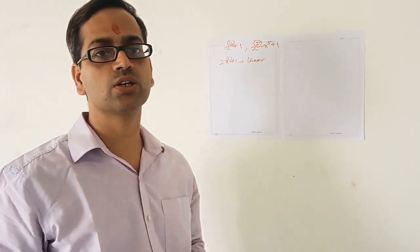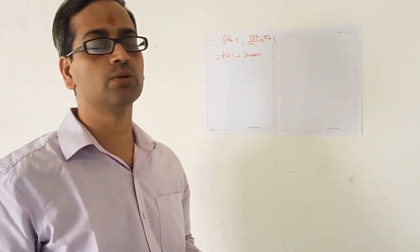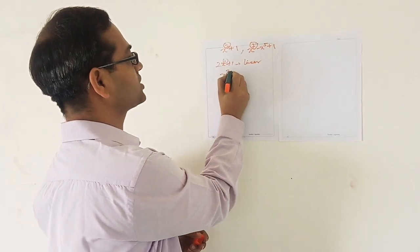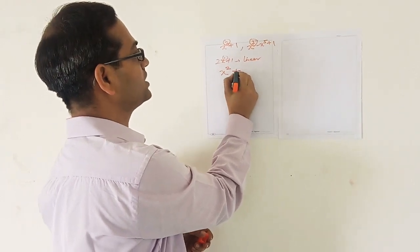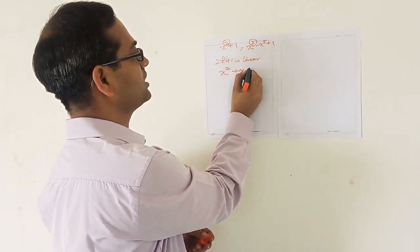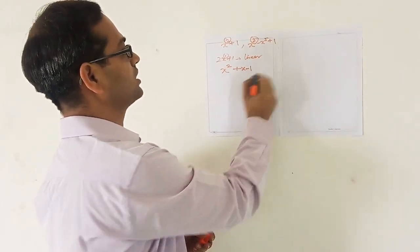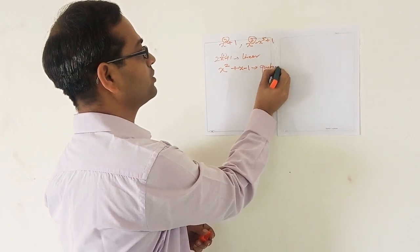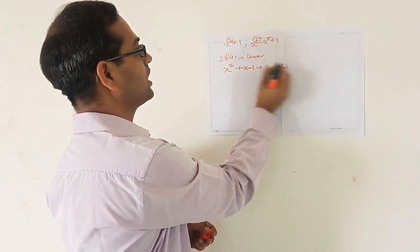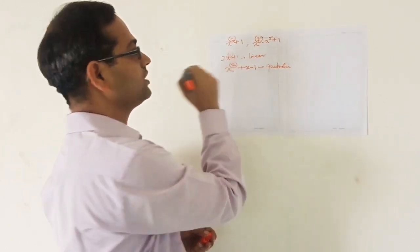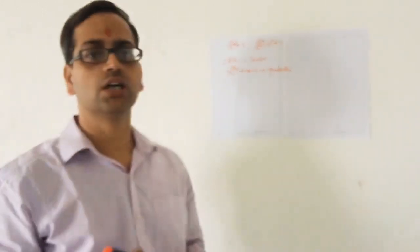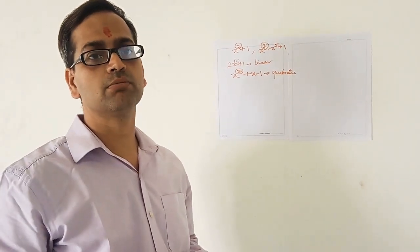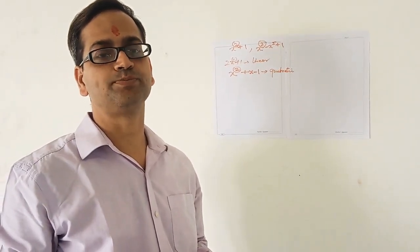we call it a quadratic polynomial. An example of a quadratic polynomial is x² + x - 1. This is a quadratic polynomial with the highest power being 2. Another example would be x² - 1.